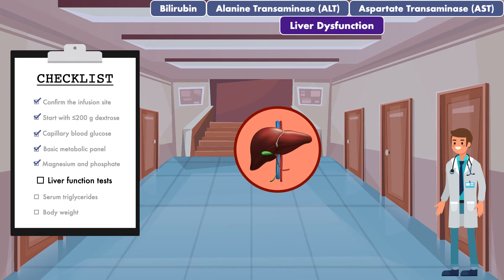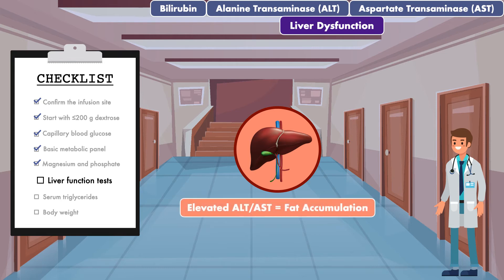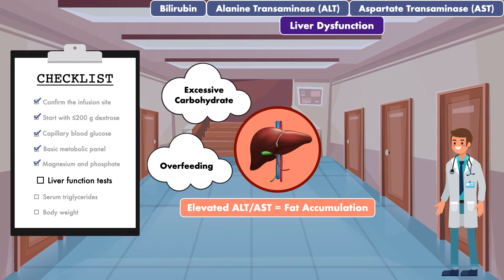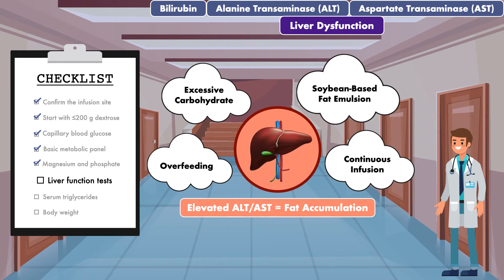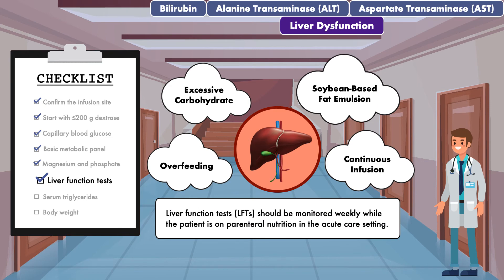However, when ALT and AST remain persistently elevated or continue to climb, it suggests there is fat accumulation in the liver. Possible nutrition-related causes include overfeeding, excessive provision of carbohydrate, the use of a soybean-based lipid emulsion, or the use of a continuous parenteral infusion. There are various adjustments that can be made to avoid further complications, which will be covered in detail in a future video. For now, it is enough to know that you should obtain LFTs prior to administration, and that LFTs should then be monitored weekly while the patient is on parenteral nutrition in the acute care setting.